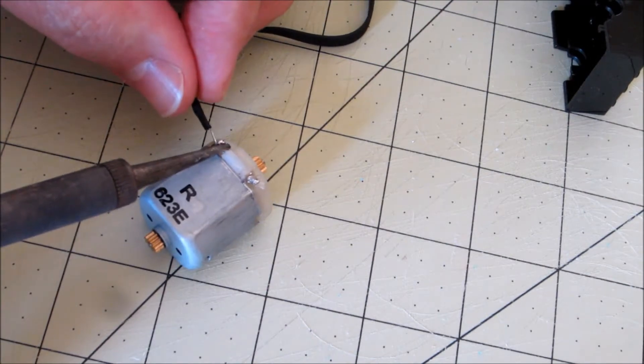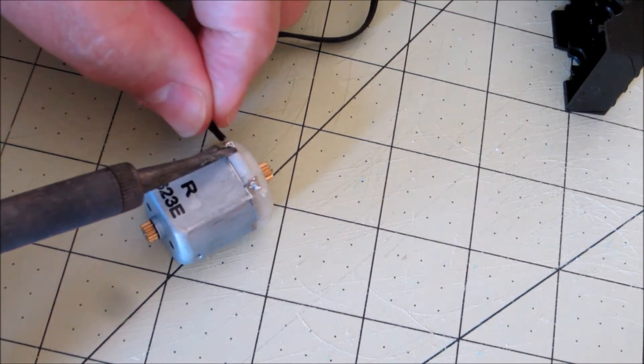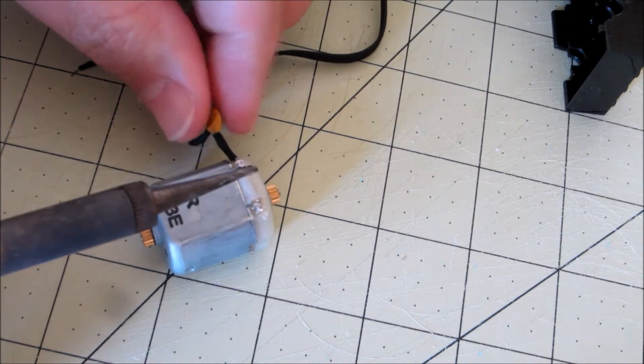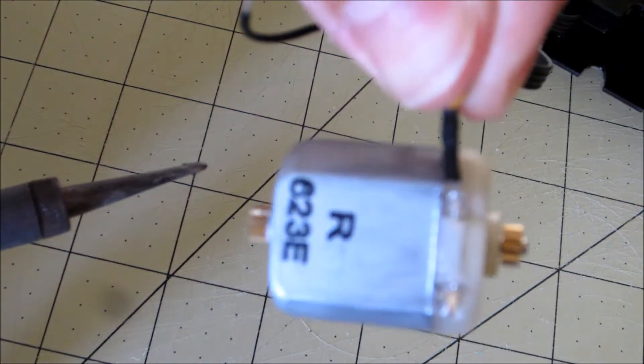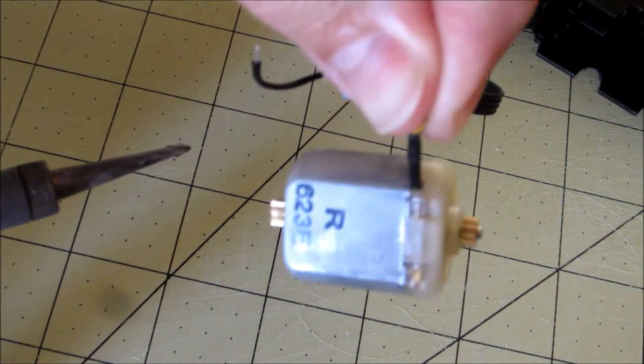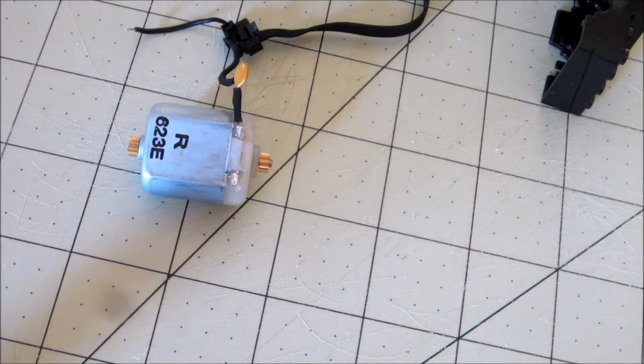Just warm up the solder, get that nice and fluid again, and then just stick that wire right through the connector, just like that, and then we'll flip it around and do the other side.